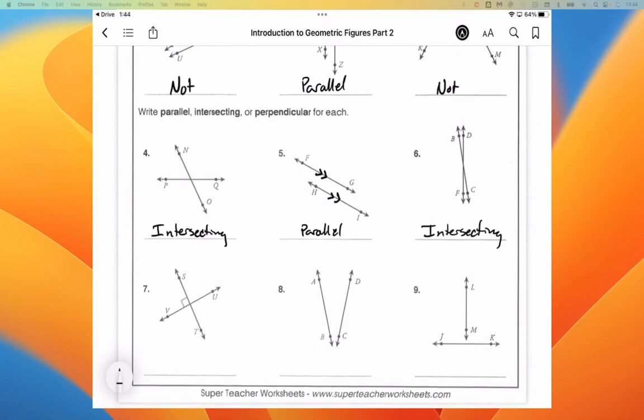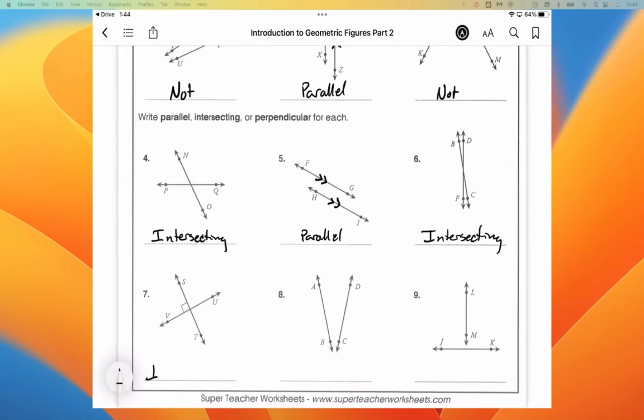Here for number seven, we have both intersecting and perpendicular. I think that they actually only wanted us to write perpendicular, but I am going to say intersecting and perpendicular because that figure is in fact both.